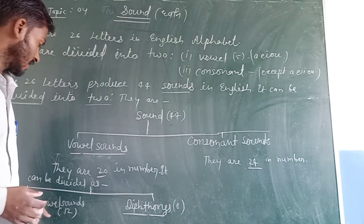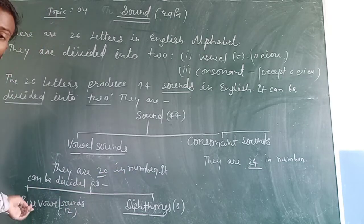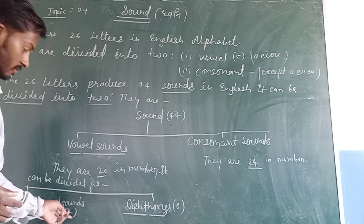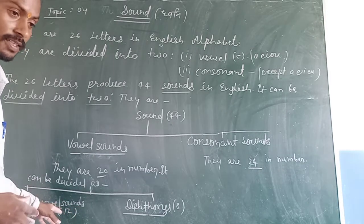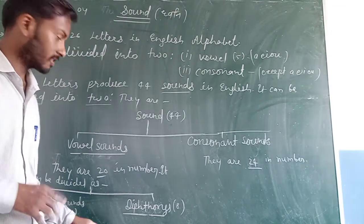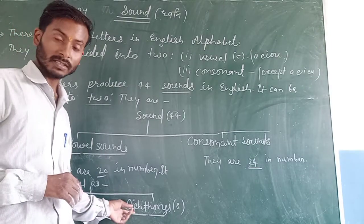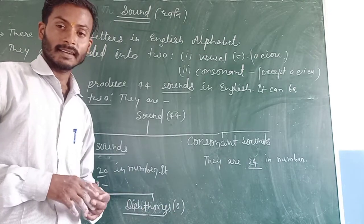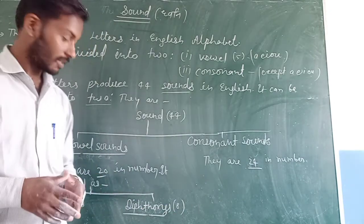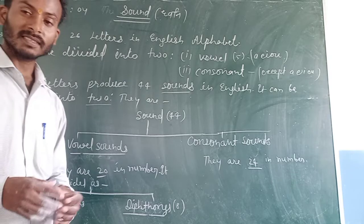It can be divided as pure vowel sounds, glides, diphthongs. They are 8 in number. Pure vowel sounds are 12.